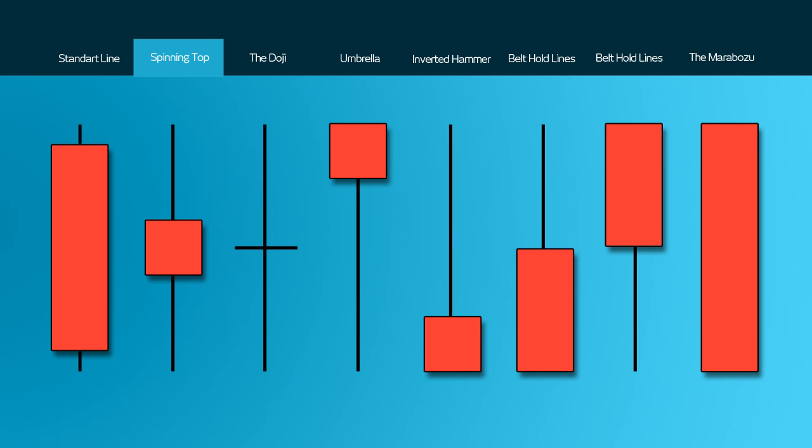The third candlestick, where there's little or no real body, is known as a doji. This forms when a security or an index open and close are virtually equal. The length of the upper and lower shadows can vary and the resulting candlestick looks like a cross, an inverted cross or a plus sign. Alone they are neutral patterns but any bullish or bearish bias can be seen on the preceding price action and future confirmation. For reference the word doji refers to both the singular and plural form.